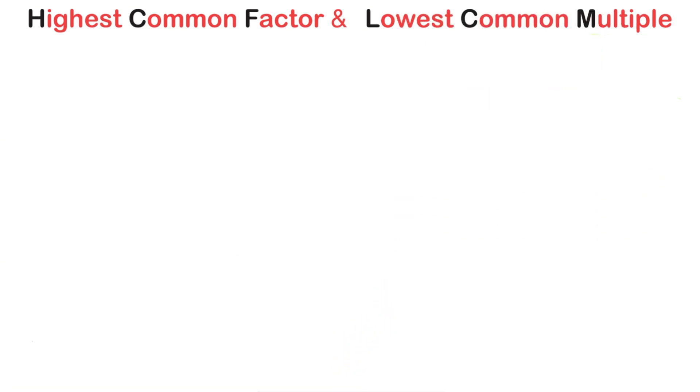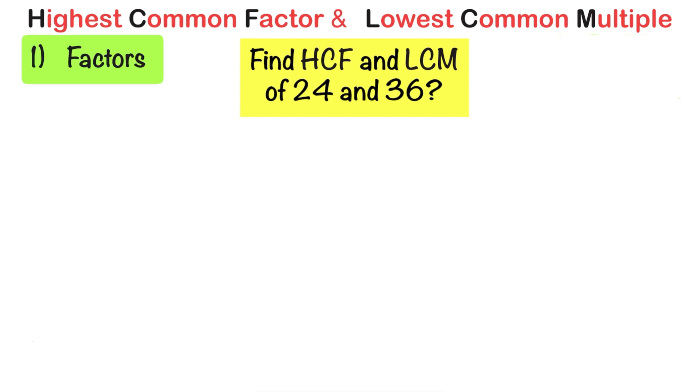Here is a question. How do we find highest common factor and the lowest common multiple of 24 and 36? Let's start with the highest common factor. First step. List all the factors of 24 and 36.